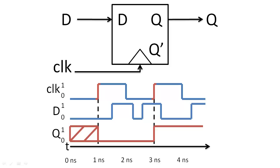If the data input ever changes close to the clock edge, the flip-flop will store the value of the input from just before the clock edge.